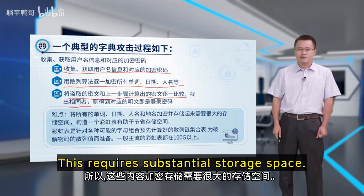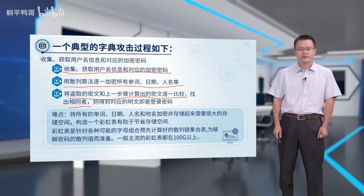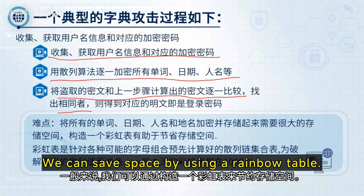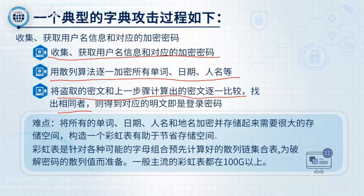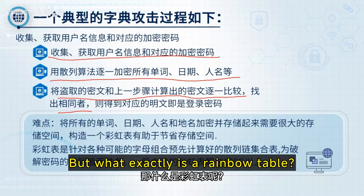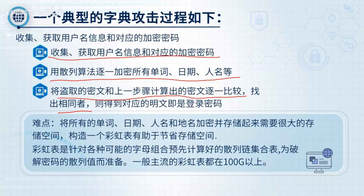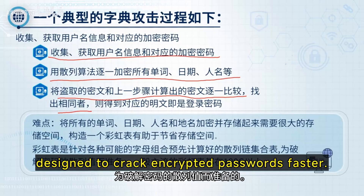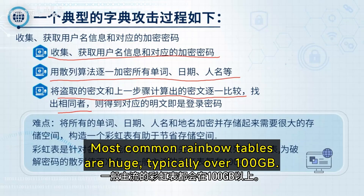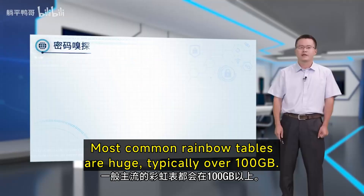Dictionary attacks face one major challenge: encrypting and storing all words, dates, and names requires substantial storage space. We can save space by using a rainbow table. A rainbow table is a pre-calculated set of hash chains for possible password combinations, designed to crack encrypted passwords faster. Most common rainbow tables are huge — typically over 100 gigabytes.